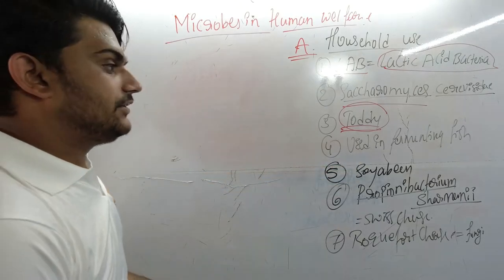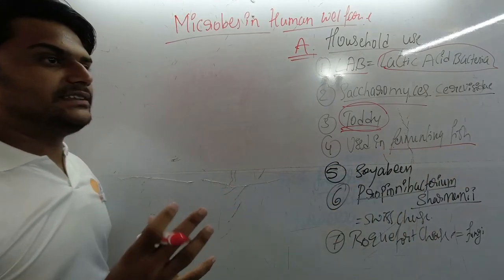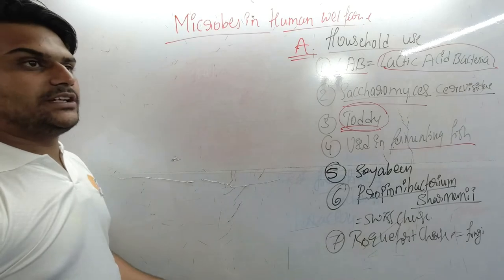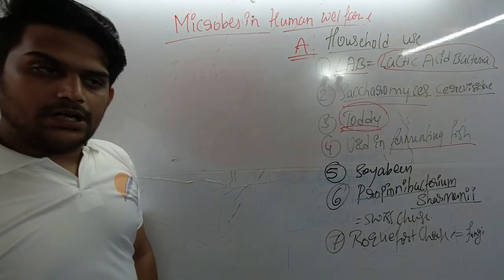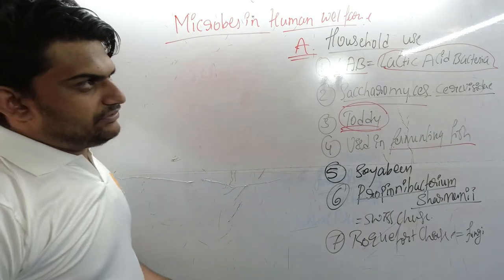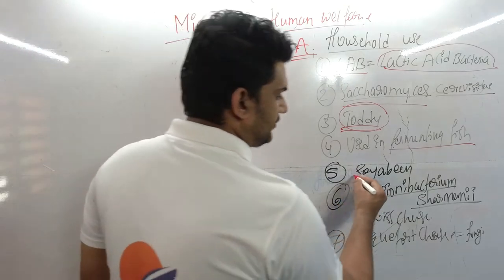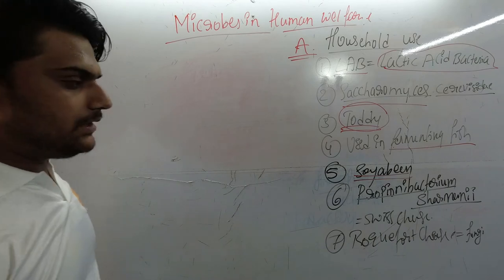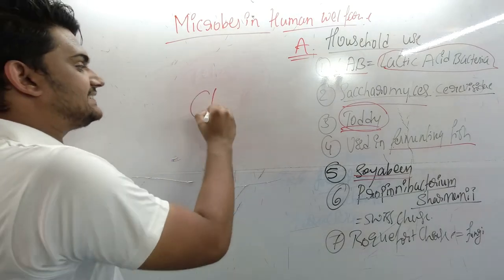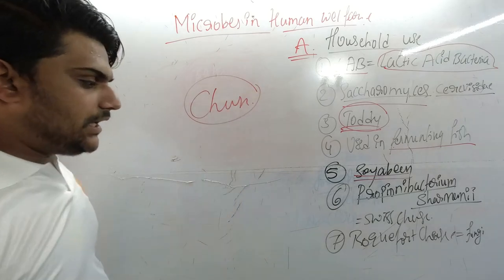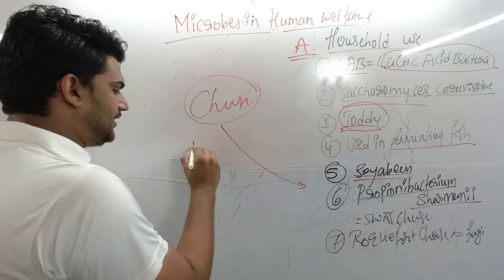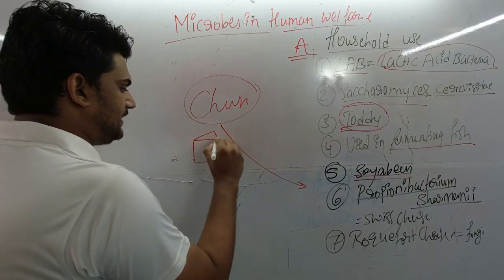We also use bacteria to ferment fish, which gives a very peculiar taste different from fresh fish. Bacteria are used for extracting oil and fermenting soybeans as well. Another major example we eat is cheese.